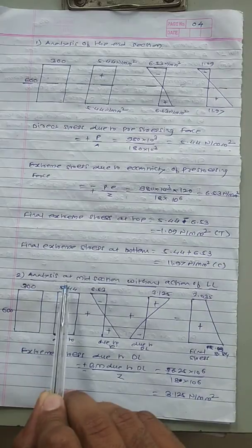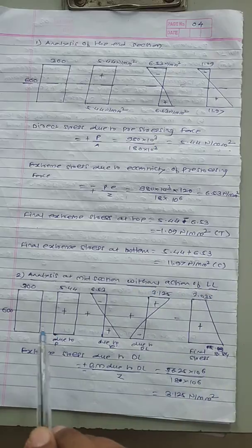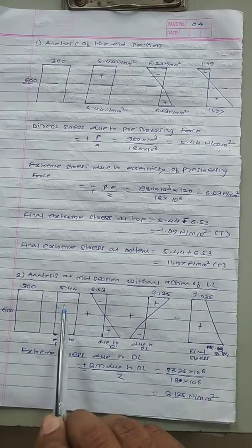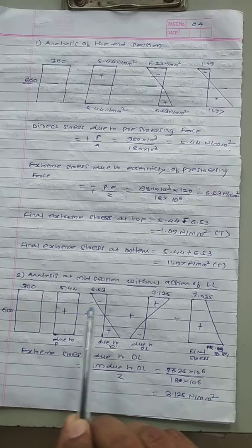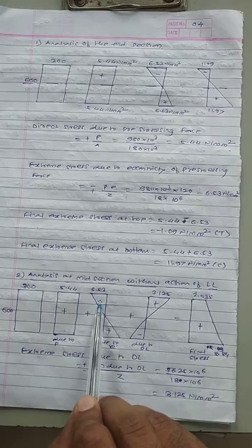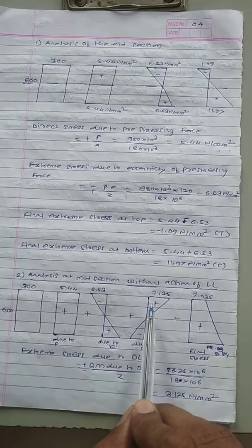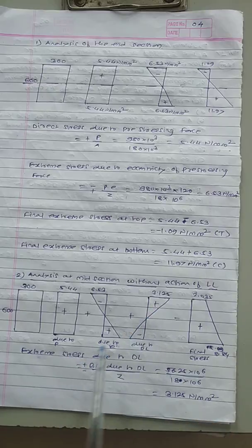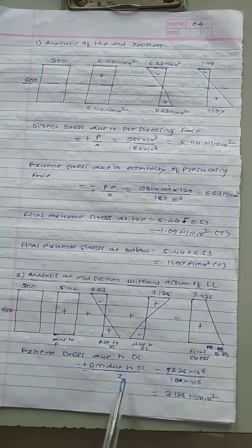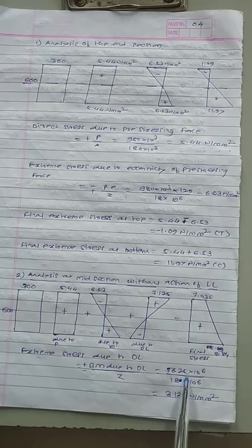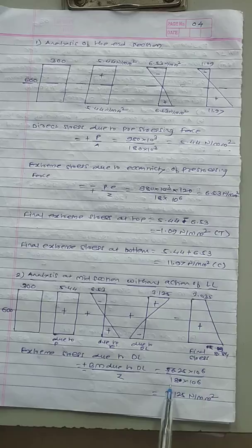Analysis at the midsection without live load: we consider direct stress due to pre-stressing force, stress due to eccentricity of the tendon, and bending stress due to dead load. Extreme stress due to dead load bending moment = MD/Z = (56.25 × 10⁶) / (18 × 10⁶) = 3.125 N/mm².